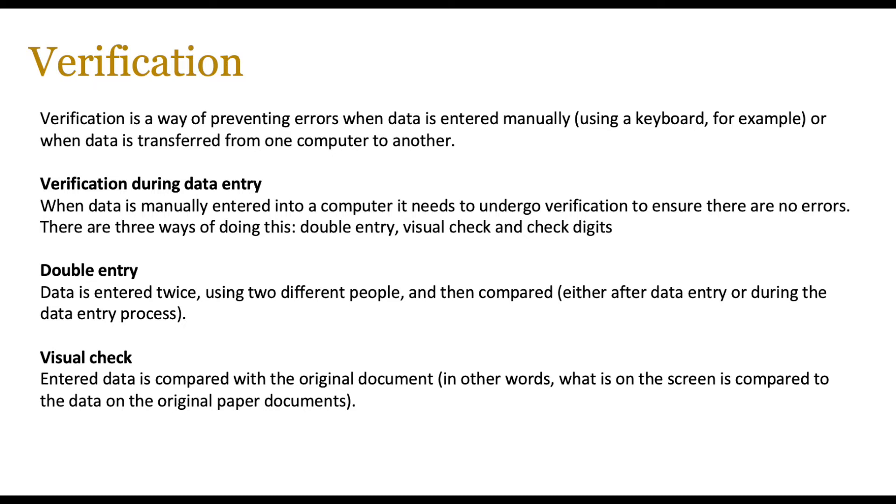For example, when you are typing in blue and brown, think back to that color example again. If the person liked blue and you entered brown, you can verify that by visually checking it, which means that entered data is compared with the original documents. In other words, what is on screen is compared to data on the original paper document. Or you can use double entry, where data is entered twice using two different people and then compared.